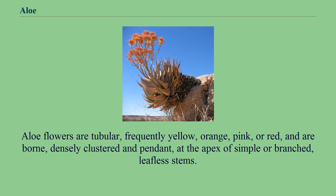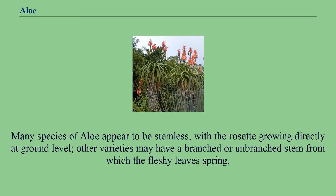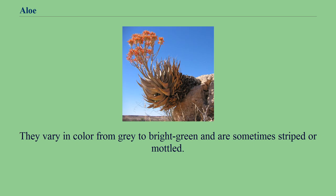Aloe flowers are tubular, frequently yellow, orange, pink, or red, and are borne densely clustered and pendant at the apex of simple or branched, leafless stems. Many species of aloe appear to be stemless, with the rosette growing directly at ground level. Other varieties may have a branched or unbranched stem from which the fleshy leaves spring.